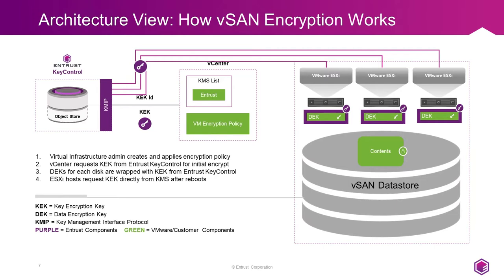Now let's look at how vSAN encryption works. It's a little different from vSphere encryption because you're not encrypting individual virtual machines — you're encrypting the entire vSAN datastore, meaning any VM stored on that datastore is automatically encrypted. You still need the Key Control cluster added to vCenter and a functional vSAN cluster. After enabling vSAN encryption, each host asks vCenter to request a KEK from Key Control, and the KEK ID is passed to each ESX host in the vSAN cluster. Each ESX host then derives a Data Encryption Key from the KEK ID for each disk, encrypts the disks one at a time by evacuating data, encrypting the drive, and moving data back — rinse and repeat until all disks are encrypted.